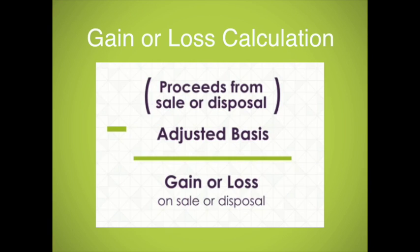When you sell a property, the amount you receive as payment is called the sale price, or in taxes, the proceeds from the sale. While this is usually the cash you'd receive for selling the item, this amount also includes everything of benefit that you receive for the property. So if the buyer assumes a loan that you had on the property, that amount is included in the sales price. And if the buyer trades you items or services for the property, then the fair market value should be included as the proceeds as well. If you'll receive payments over multiple tax years, still include the total amount as the sales price.